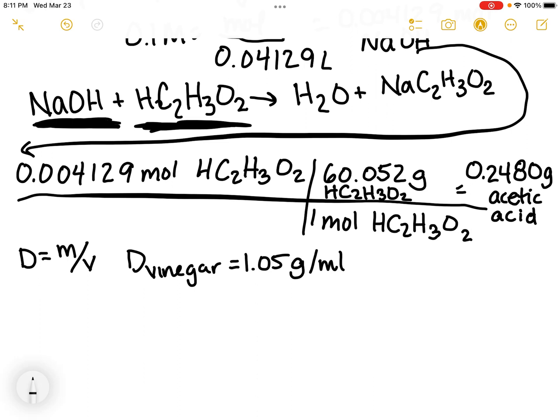The density is 1.05 grams per milliliter. We're going to figure out how many grams of vinegar were in our 5.00 milliliters. 5 times 1.05 gives me 5.25 grams of vinegar.